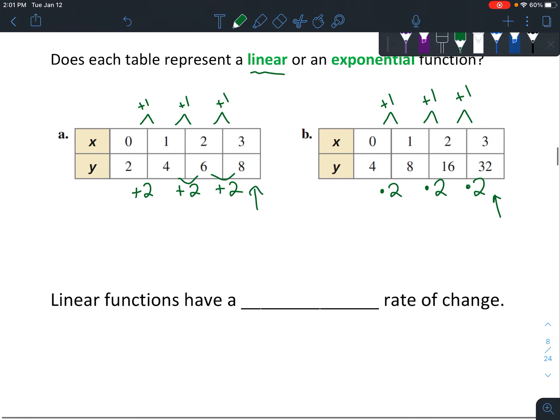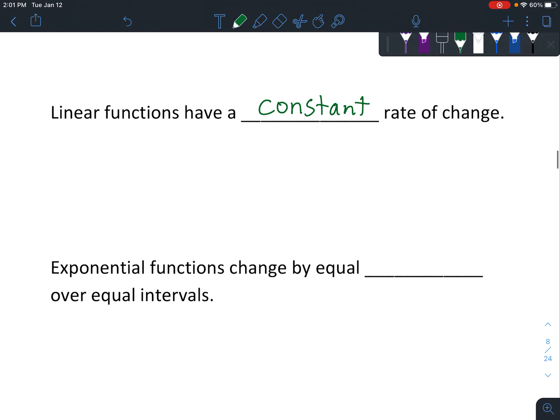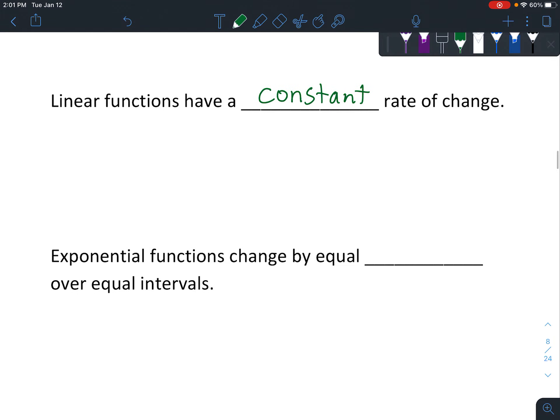So linear functions have a constant rate of change. And then exponential functions change by equal factors over equal intervals. Or basically, they change by being multiplied by something.